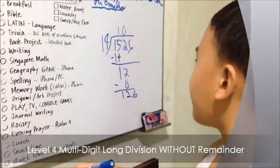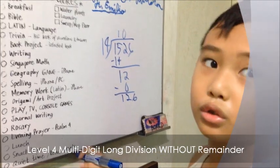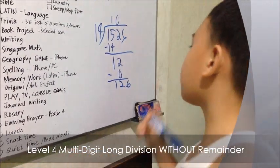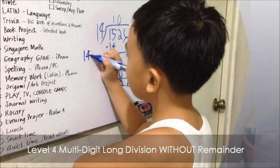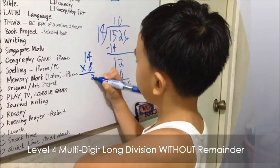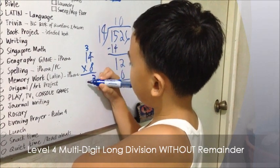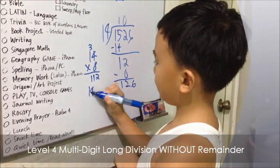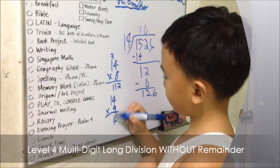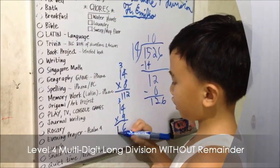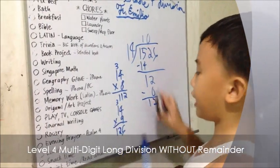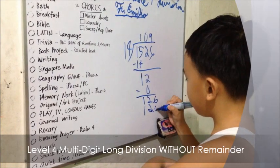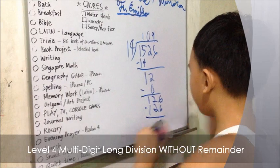So let's do this. Let's first do 14 times 10 — 14 times 10 equals 140. So if it's 140, I have to minus it. How about 14 times 8? That's 112. How about 14 times 9? That's 126. Exactly. So the answer here is 9. 126 minus 126 equals 0. Yes! We're finished.